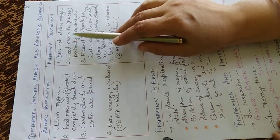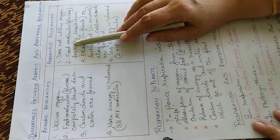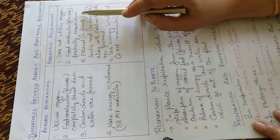Food molecules - glucose completely broken down in case of aerobic. In anaerobic, food molecule glucose is partially broken down.